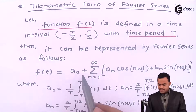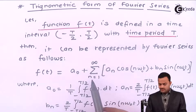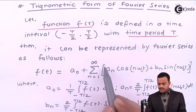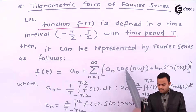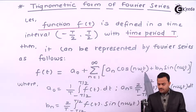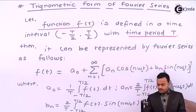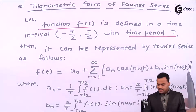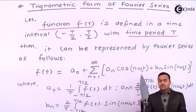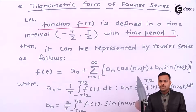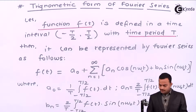f(t) equals a0 plus summation n from 1 to infinity of the bracket a_n cos(n·ω₀·t) plus b_n sin(n·ω₀·t), where ω₀ is the fundamental frequency given by 2π divided by T₀, and T₀ is the fundamental time period.